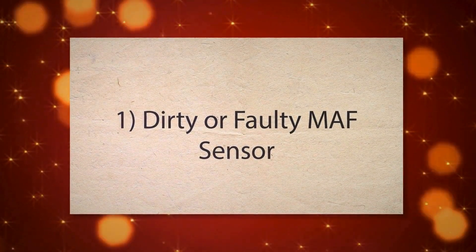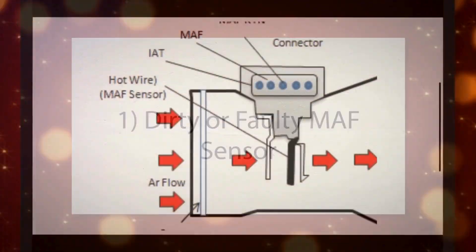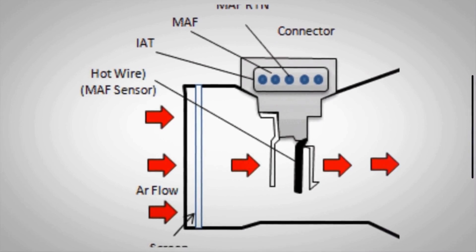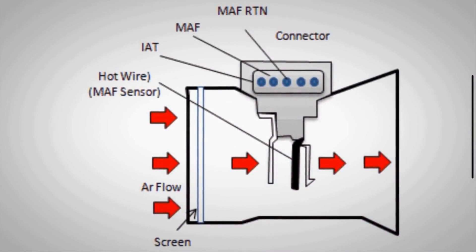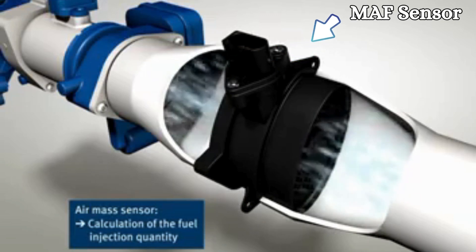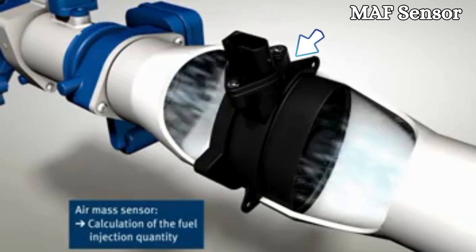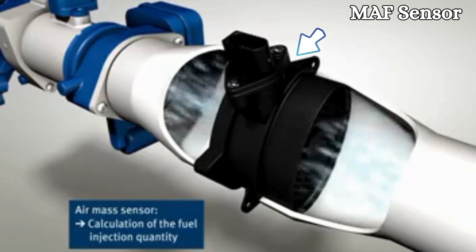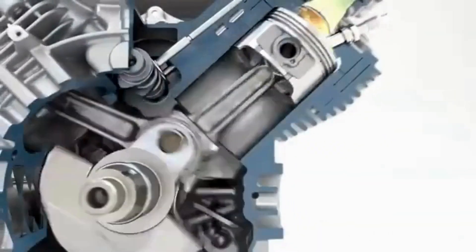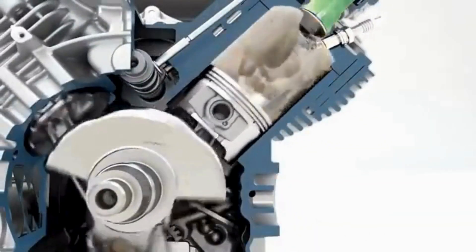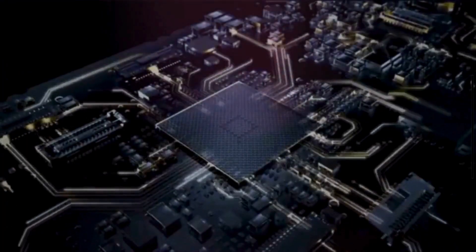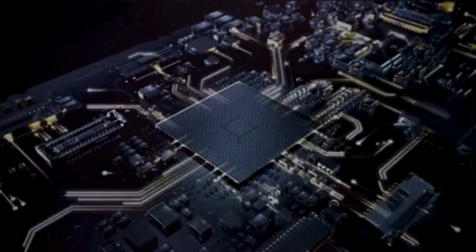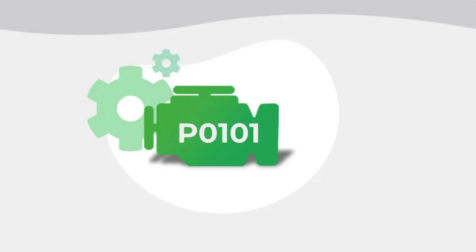First up, let's talk about the mass airflow sensor itself. The MAF sensor measures the amount of air entering the engine, which is crucial for the engine control unit to balance and deliver the correct fuel-to-air ratio. When the ECU detects a problem with this signal, it triggers the PO101 code.